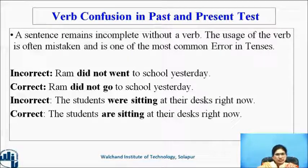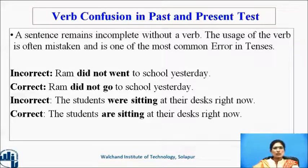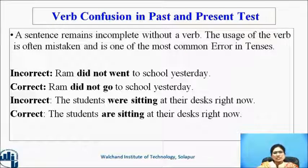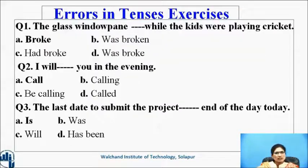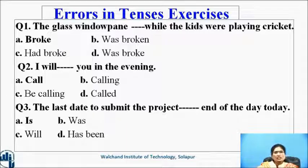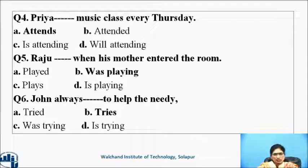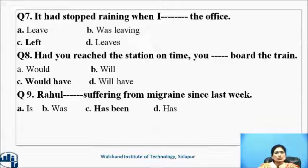Verb confusion in the past and present tense. A sentence remains incomplete without a verb. The usage of the verb is often mistaken and is one of the most common errors in tenses. 'Ram did not went to school yesterday' — corrected to 'Ram did not go to school yesterday', because when using 'did', the past tense is already indicated. 'The students were sitting at their desks right now' — corrected to 'The students are sitting at their desks right now', because 'right now' indicates the present tense. 'The glass window pane broke while the kids were playing cricket.' Read the examples to understand which type of tense should be used for correction.